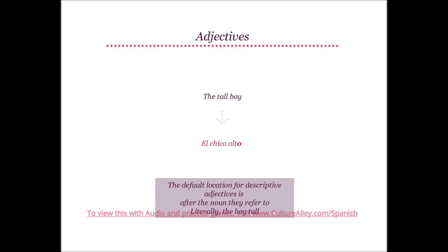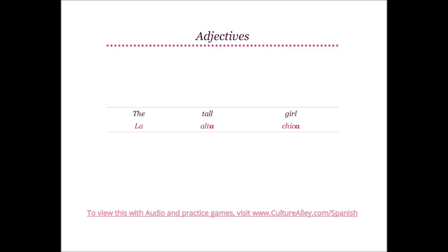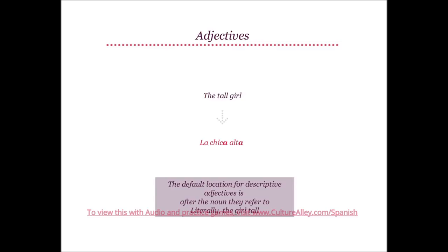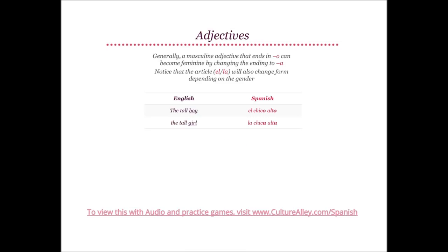Moving on, let's look at the tall girl. The translates to la, tall is alta, and girl will be chica. Note how tall becomes alta with feminine noun chica — both end in A. Thus, the tall girl becomes la chica alta. Generally, a masculine adjective that ends in O becomes feminine by changing the ending to A — for example, alto and alta.